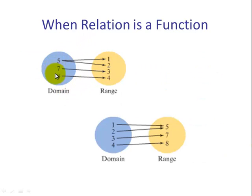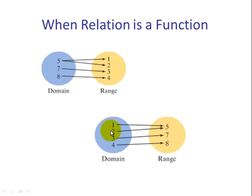Is this a function? The answer is no — we have an input 5 going to two different outputs: a 1 and a 2. Is this relation a function? The answer is yes. Every X has one and only one Y. It is okay for different X's — different inputs — to go to the same output.